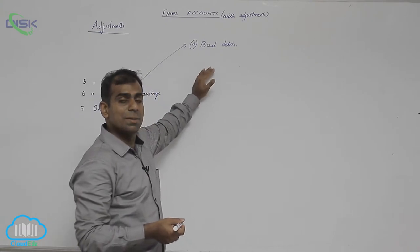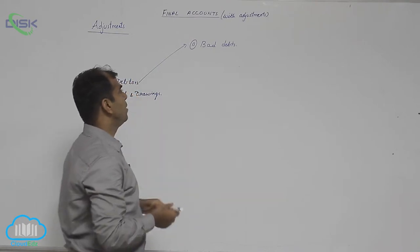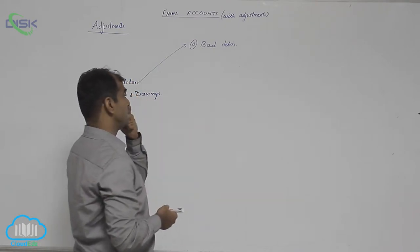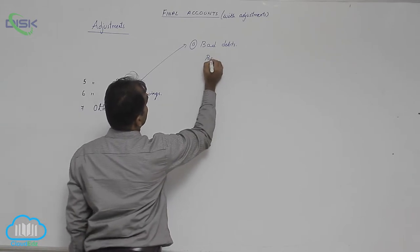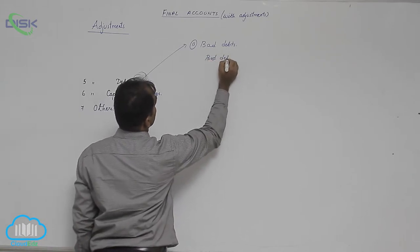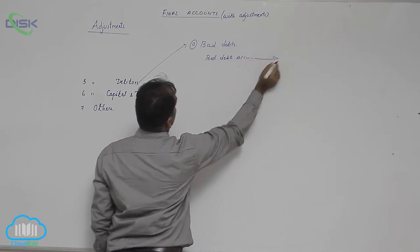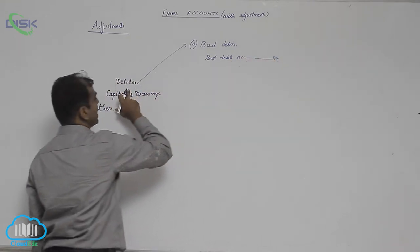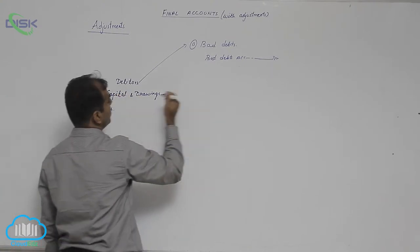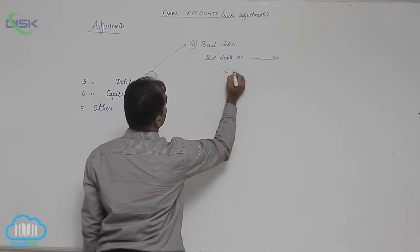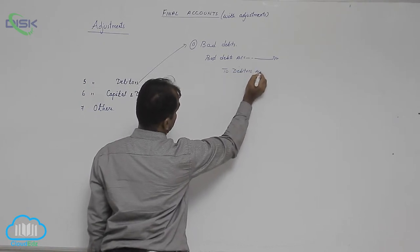Bad debt represents a loss. Applying the rule of nominal account — debit all expenses and losses — we write the journal entry as bad debts account debit. The customers are showing a debit balance and you are not going to recover from them, so remove the amount by crediting their account: debit to debtors account. This is the first entry.